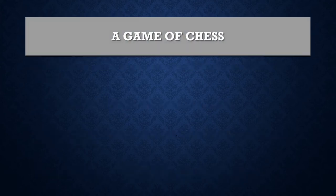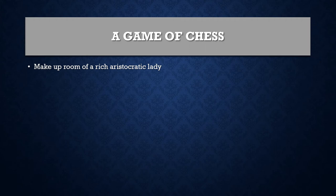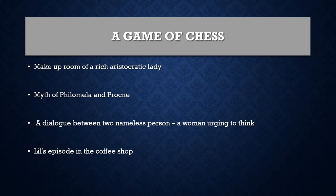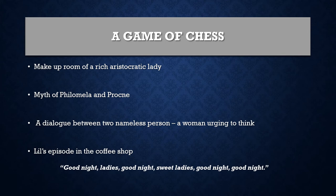The next is A Game of Chess. The first scene describes the make-up room of a rich aristocratic lady, which is followed by the myth of Philomela and Procne. Then the poem has a dialogue between two nameless persons — a woman urging to think. The last episode is Lil's episode in the pub, which concludes with a reference to the last words uttered by Ophelia in Shakespeare's Hamlet before she drowns herself: 'Good night, ladies, good night, sweet ladies, good night, good night.'